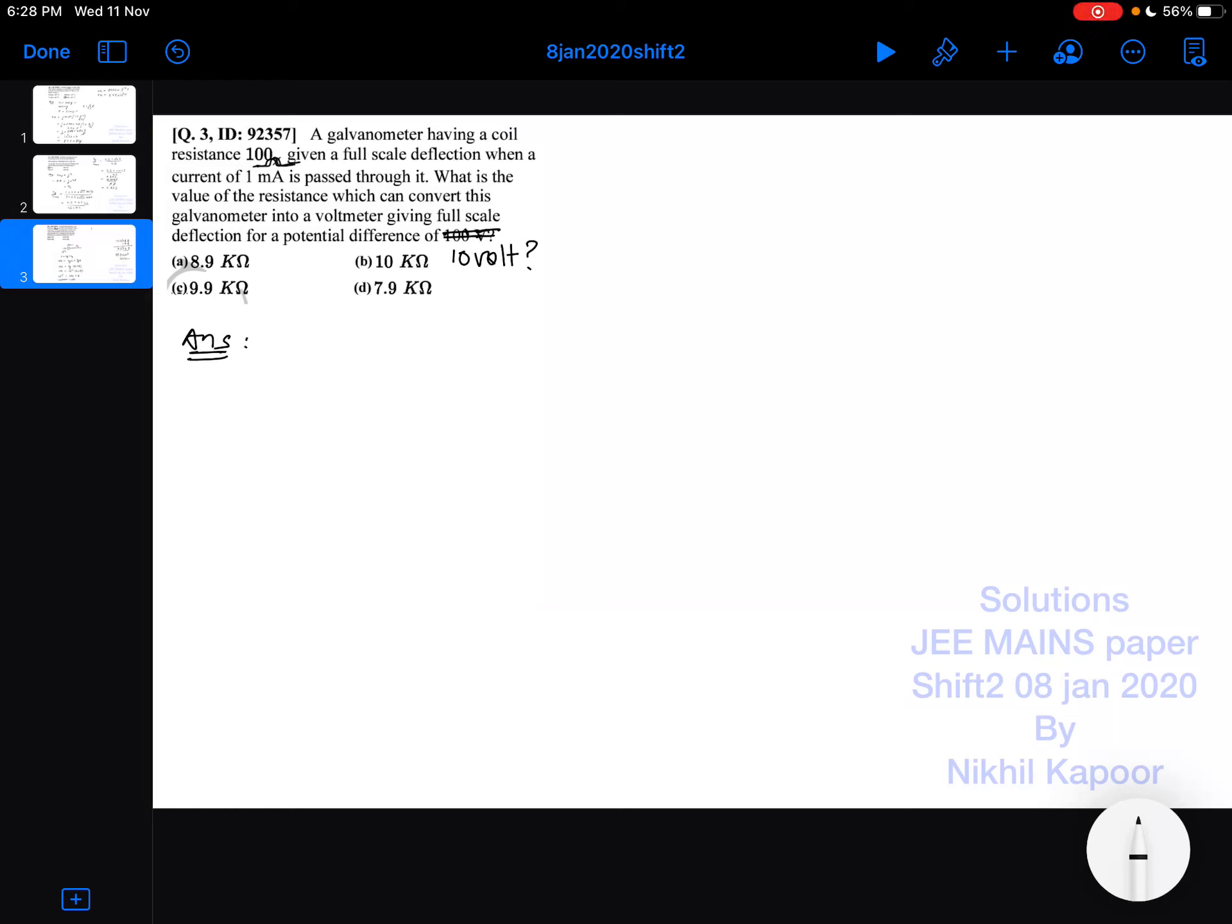Let's start with the third example. A galvanometer having a resistance of 100 ohm gives full scale deflection for a current of 10 raised to minus 3 ampere (10 milliampere). What is the value of resistance that must be connected in series so that it can give full scale deflection for 10 volt?